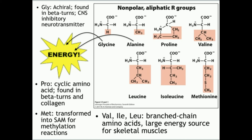These are what we call the non-polar aliphatic R groups. What that means is that in general they are just simple non-aromatic carbon chains, and they can have other atoms there. For example, methionine has a sulfur, and glycine only has a hydrogen, but the point is they're non-polar. They are not polar groups.